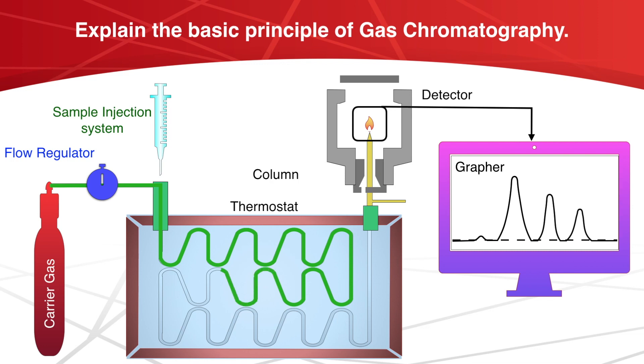Each component of the mixture in its passage through the column is retarded by the stationary liquid phase. The degree of retardation of a component depends upon the partition coefficient of that component in the liquid phase.